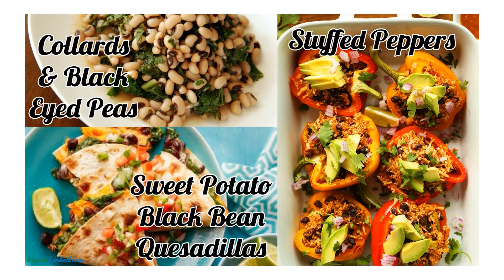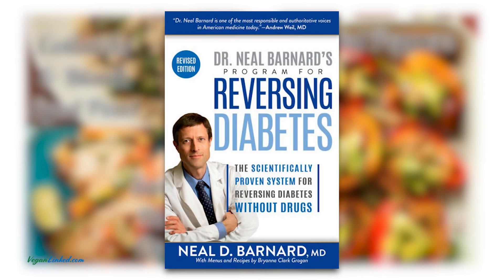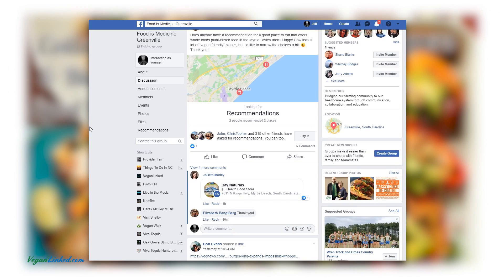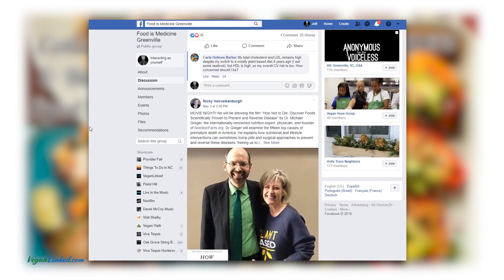A lot of people overestimate how hard it will be to switch to a plant-based diet, but once you get going, it is quite easy to continue. If you want more information on reversing your diabetes with a plant-based diet, I'd recommend Neil Barnard's book, Program for Reversing Diabetes, available on Amazon. Also, if you want to follow me on Facebook — Food is Medicine Greenville — I post resources quite often on specifically reversing diabetes.